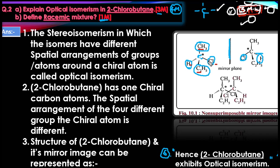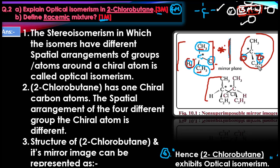This carbon is a chiral carbon, also called an asymmetric carbon. When you pass a mirror through, the hydrogen rotates to one side and the arrangement changes. The two structures are mirror images of each other but are non-superimposable mirror images, which are called enantiomers.